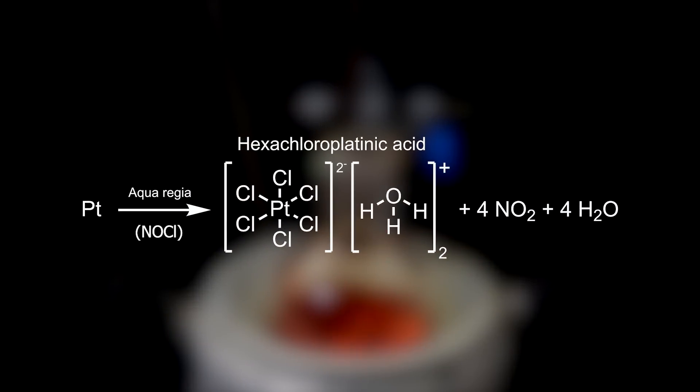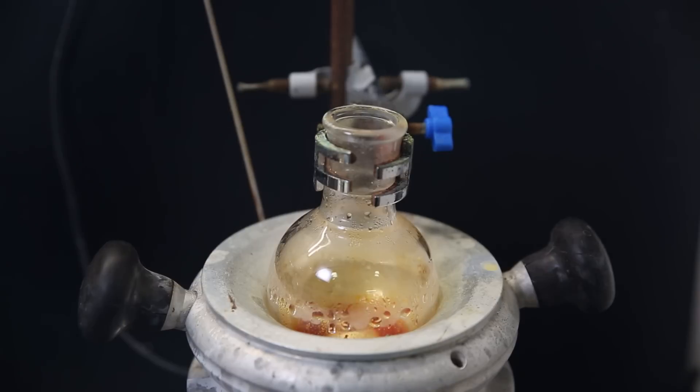In the reaction, platinum reacts with nitrosyl chloride that is formed in aqua regia from the reaction between hydrochloric acid and nitric acid, to form the hexachloroplatinate ion, along with nitrogen dioxide and water. The hexachloroplatinate forms a salt with two hydronium ions as hexachloroplatinic acid.